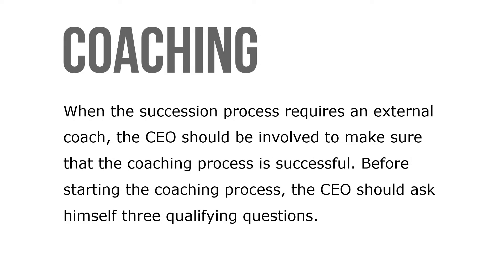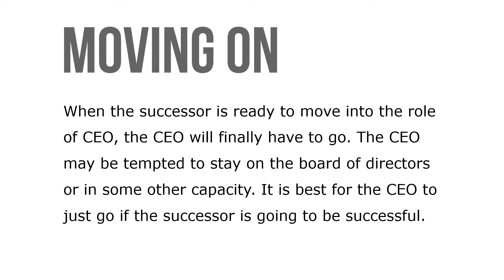When the succession process requires an external coach, the CEO should be involved to make sure that the coaching process is successful. Before starting the coaching process, the CEO should ask himself three qualifying questions. When the successor is ready to move into the role of CEO, the CEO will finally have to go. The CEO may be tempted to stay on the board of directors or in some other capacity, but it's best for the CEO just to go if the successor is going to be successful.